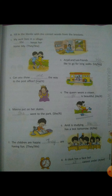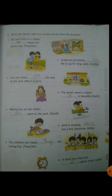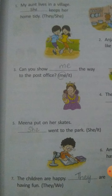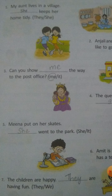Now exercise B: Fill in the blanks with the correct words from the brackets. My aunt lives in a village — she keeps her home tidy. Talking about the same aunt, so use she. Next: Anjali and I are friends — we like to go for long walks. So the second blank is we. Third one: Can you show me the way to the post office?